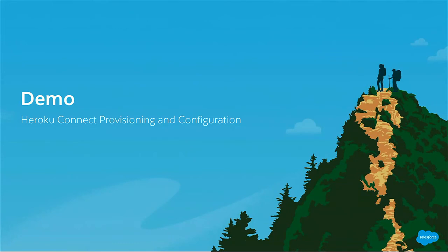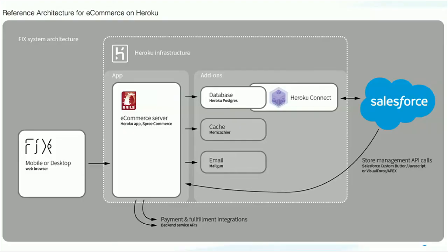We'll do a light demo. We're going to take a look at a fictitious e-commerce site called FIX. Here is the architecture: on the right-hand side you have Salesforce, integrated to a Postgres database by Heroku Connect. This database serves as the back-end data store for an e-commerce server that serves the FIX e-commerce website. We're going to show how information can be relayed back and forth between the e-commerce website and Salesforce.